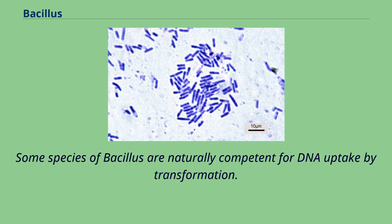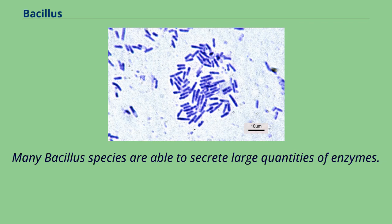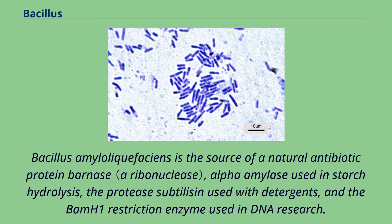Some species of Bacillus are naturally competent for DNA uptake by transformation. Many Bacillus species are able to secrete large quantities of enzymes. Bacillus amyloliquefaciens is the source of a natural antibiotic protein Barnase, alpha-amylase used in starch hydrolysis, the protease subtilisin used with detergents, and the BamHI restriction enzyme used in DNA research.